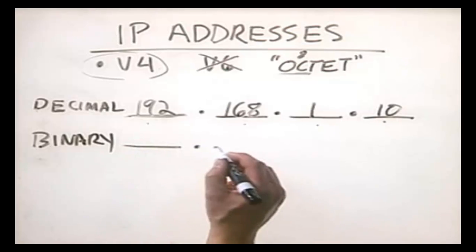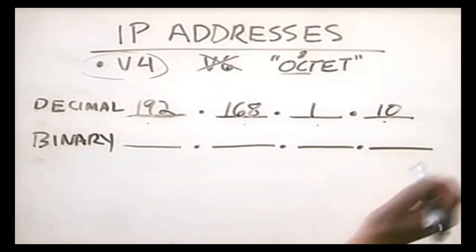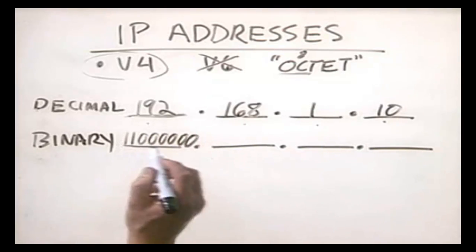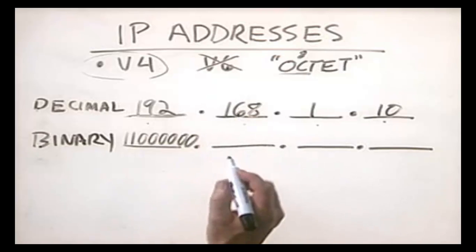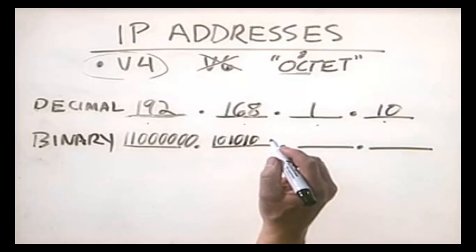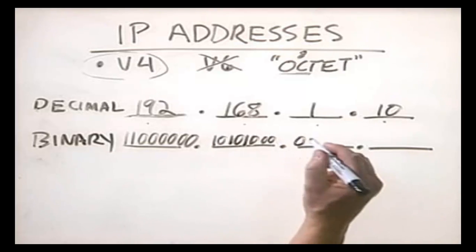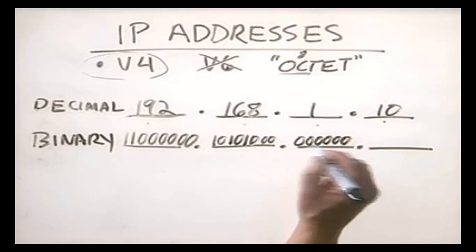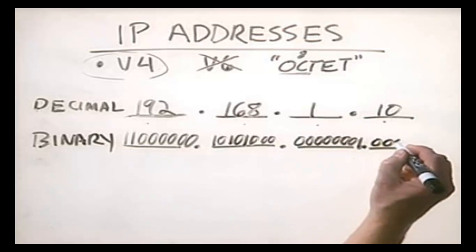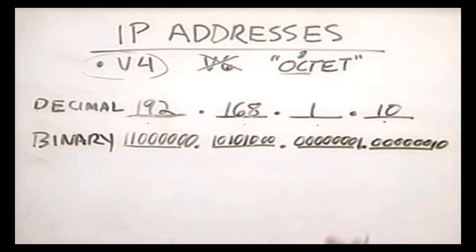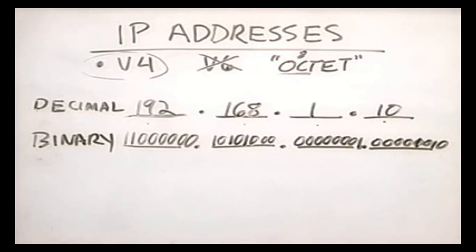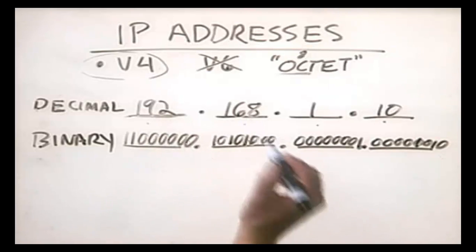For example, if we were to write the IP address 192.168.1.10 in binary numbers, it would look like this: 192 becomes 11 followed by six zeros; 168 translates to 10101000; 1 translates to seven zeros followed by a 1; and 10 translates to six zeros followed by 10. These are the binary equivalents of those decimal numbers.